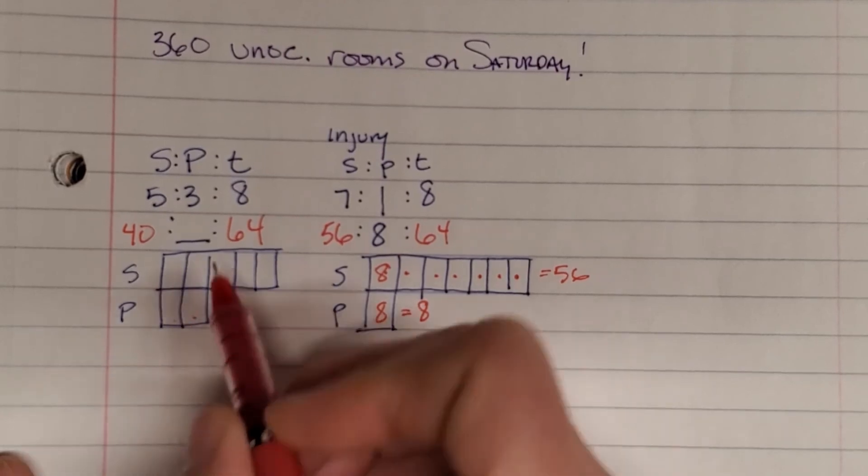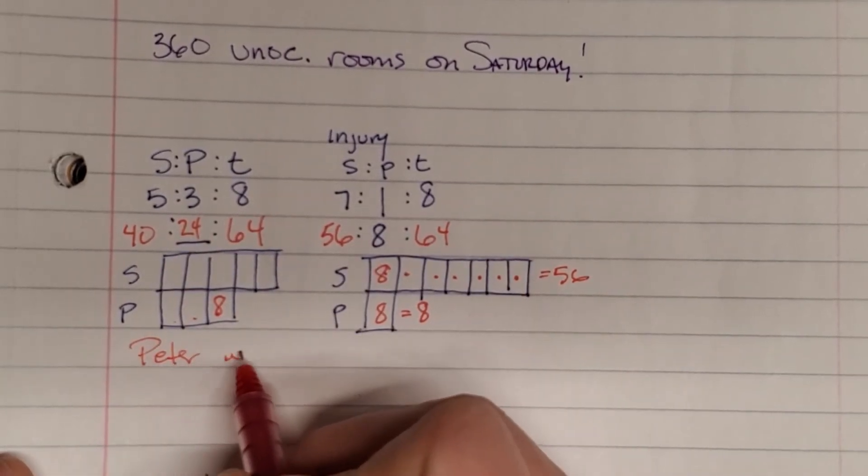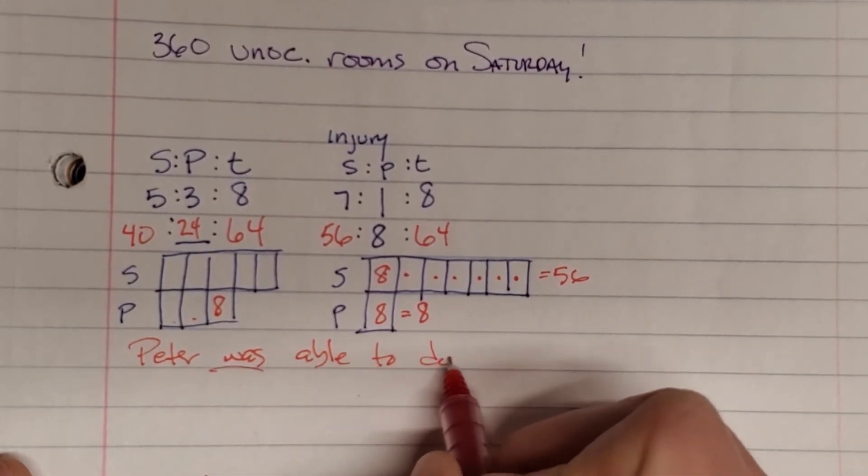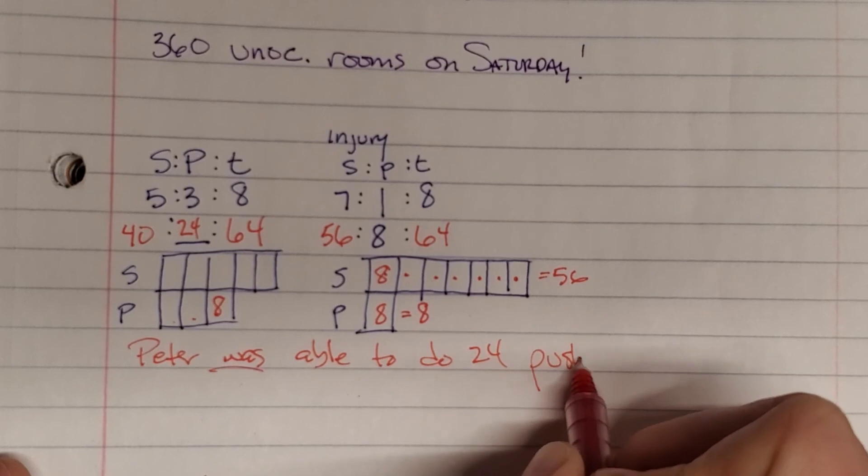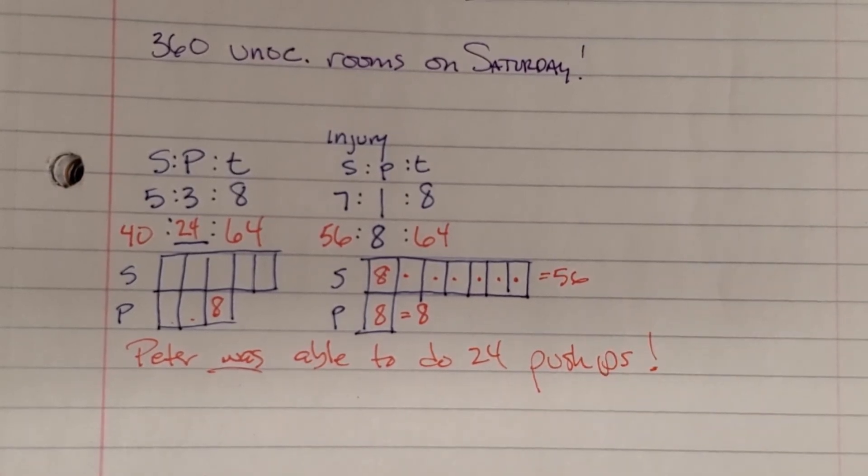One, two, three. Oh, three times eight is 24. Peter was able to do 24 push-ups. Okay. That's the answer there. All right.